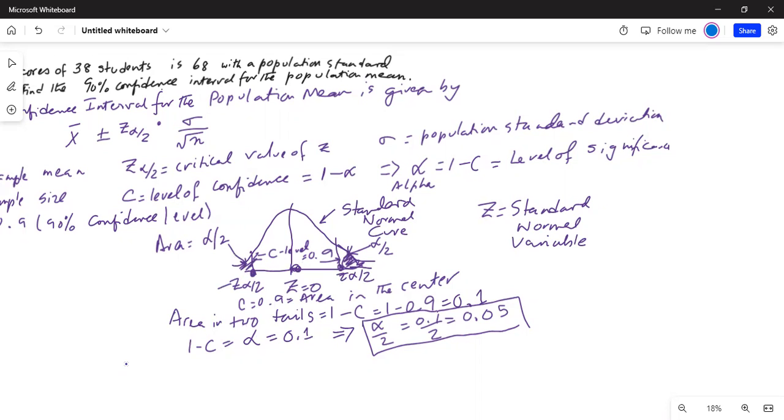Now I can use my calculator. In the calculator, I will press 2nd, then verse in the third row. Then I scroll down to inv norm. Why? Because I know the area in the left tail as 0.05. I will type area as 0.05. This is the area in left tail.